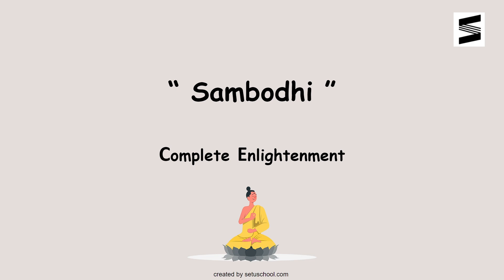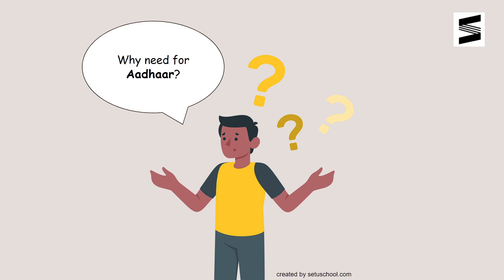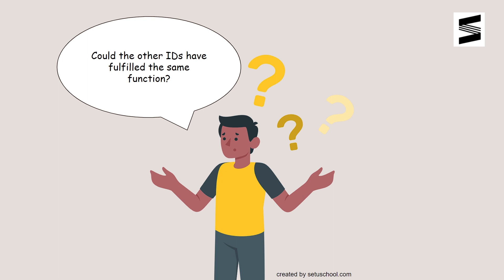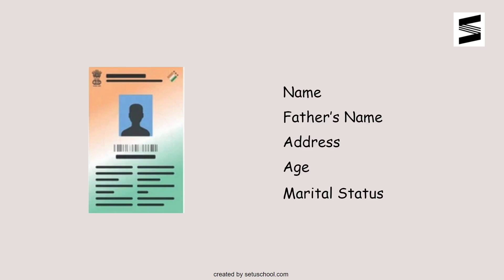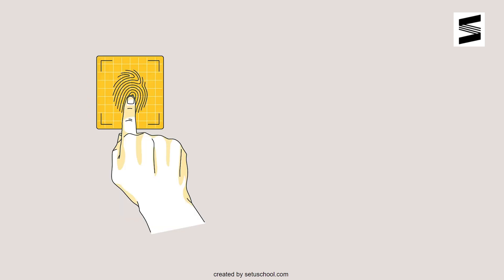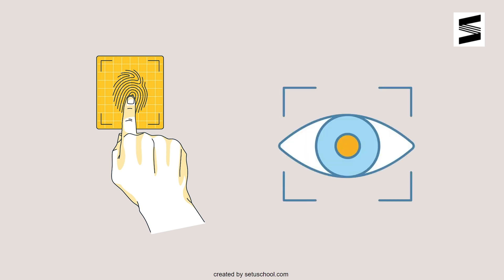Have you ever wondered why the central government of India introduced the concept of Aadhaar? In the past, the government encountered several situations where attributes featured in voter cards — like name, father's name, address, age, and marital status — were not enough to uniquely identify a person. There have been several cases of impersonation. That's why features like full hand fingerprint and eye retina scan have been introduced.